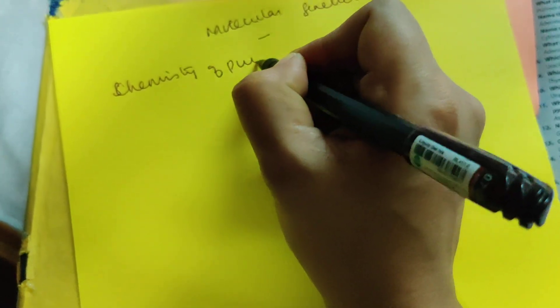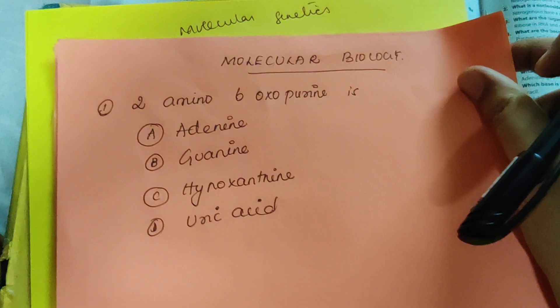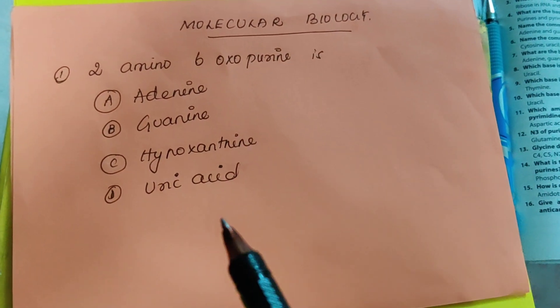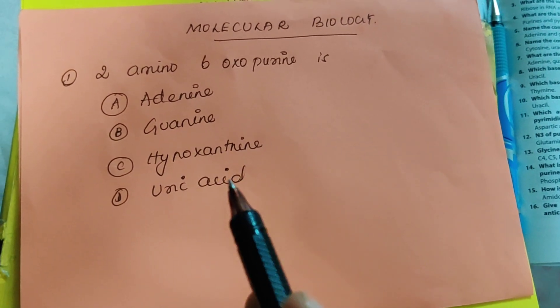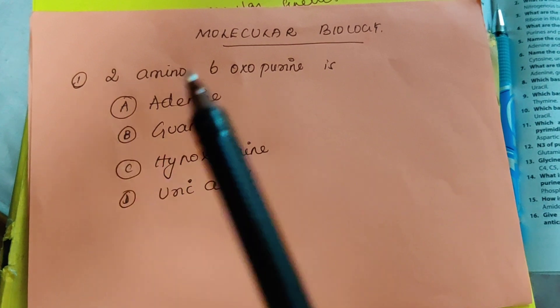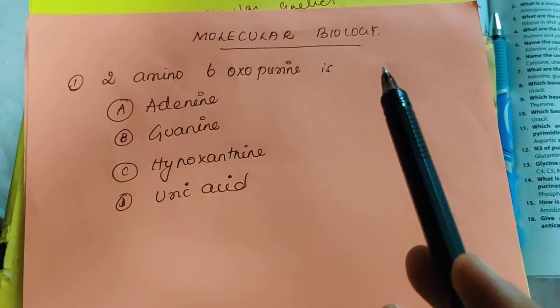In the chemistry of purines, let us go on to the subject. The question is: 2-amino 6-oxopurine — is it adenine, guanine, hypoxanthine, or uric acid? Among the 4 choices, which is the correct answer? First, note the term: 2-amino 6-oxopurine.